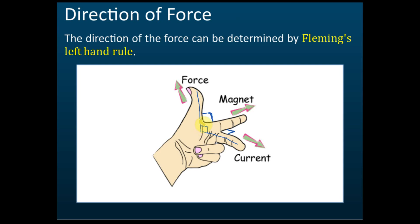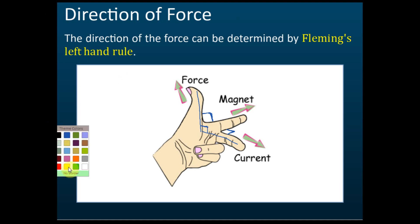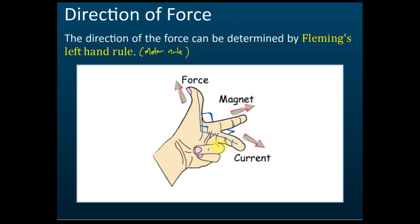When you use Fleming's Left-Hand Rule, make sure you use your left hand and not your right hand, because there is another rule called Fleming's Right-Hand Rule. You must know when to use the left-hand rule and when to use the right-hand rule. The left-hand rule is used when you want to find the force — it is also called the motor rule — and we use it to find the direction of the force.